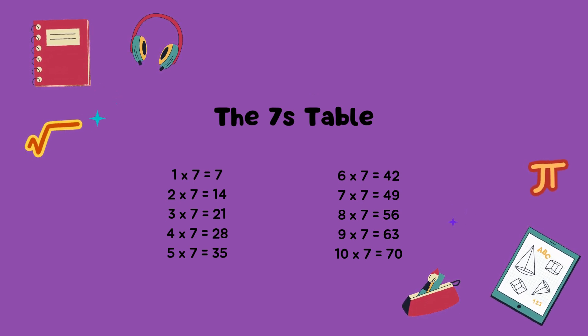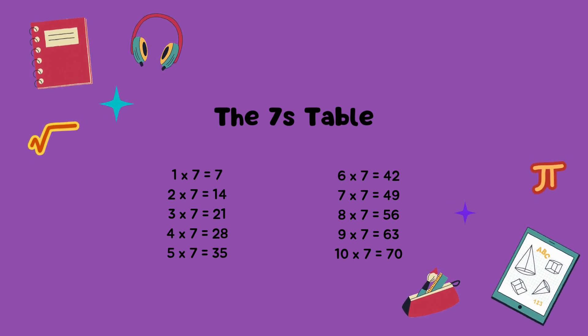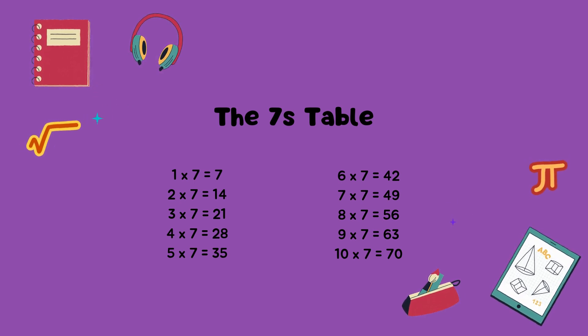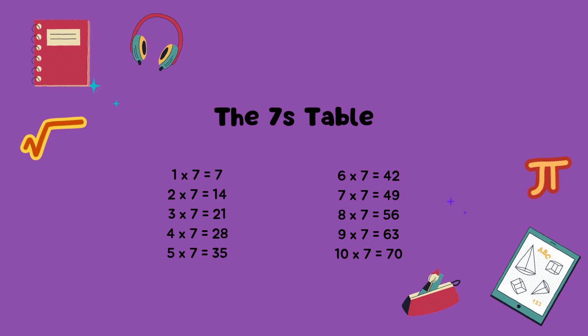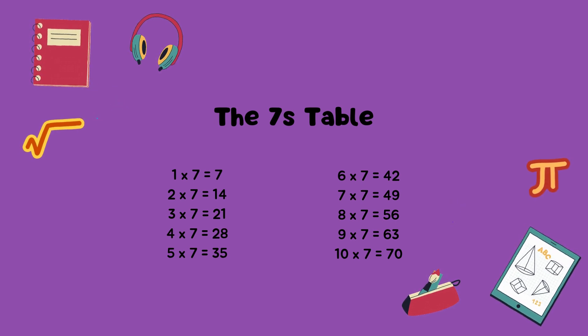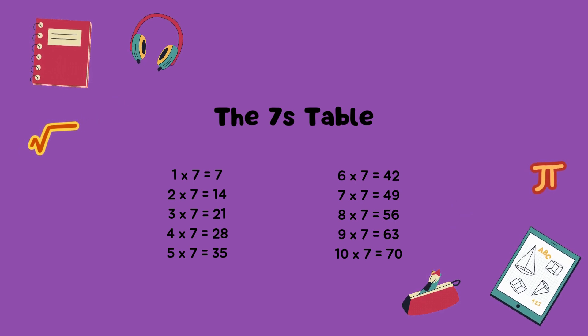Seven times seven equals forty-nine. Eight times seven equals fifty-six. Nine times seven equals sixty-three. Ten times seven equals seventy.